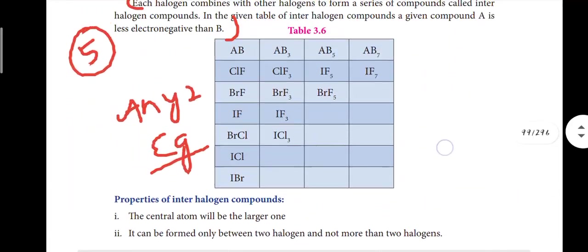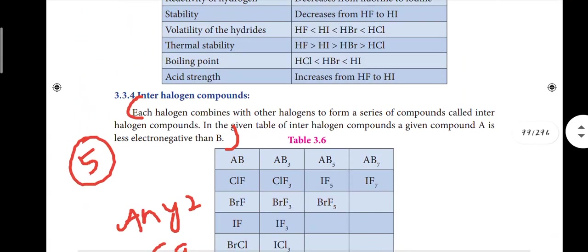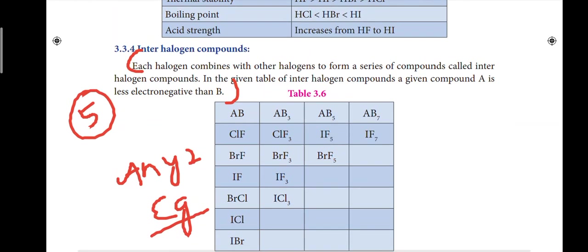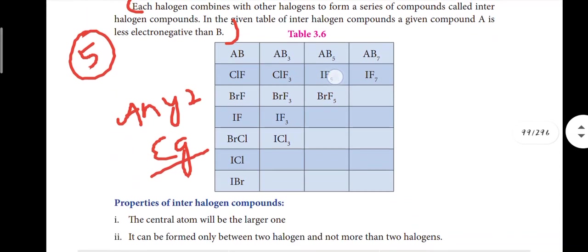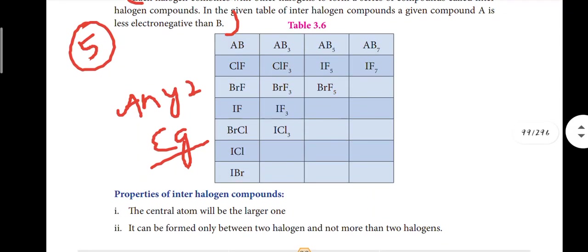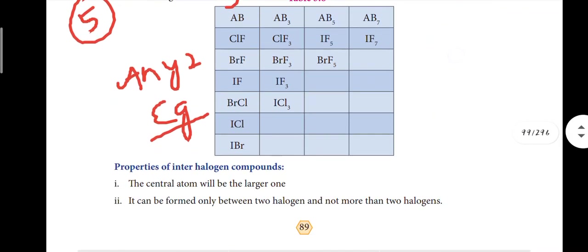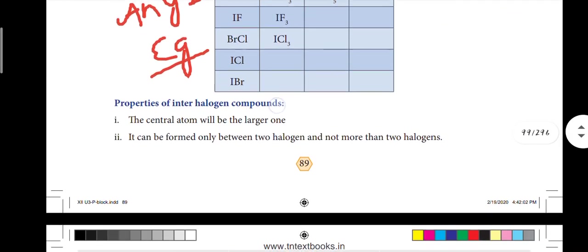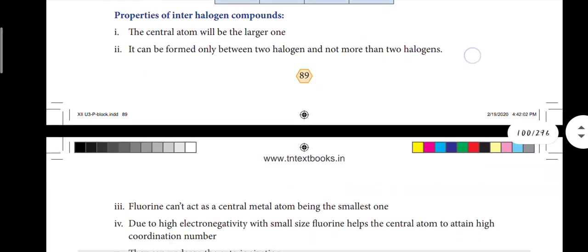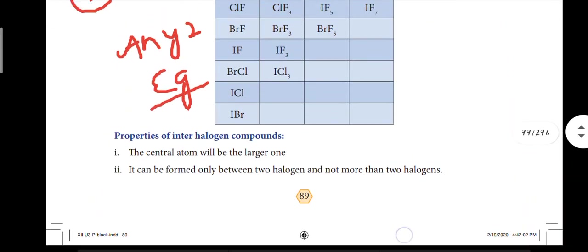Next, page number 89: what are interhalogen compounds? This is a very important question. The main definition is the first point, followed by a table. There are two examples: ClF and IF3. Sometimes the properties of interhalogen compounds - two points - are also very important. That is question number 5.